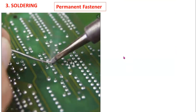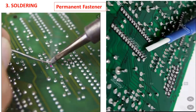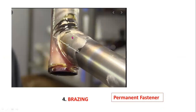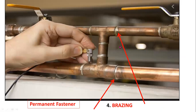Soldering is also a low-strength permanent fastener. Soldering is very important for joining electric circuits. Brazing is also a permanent fastener — a permanent joint.